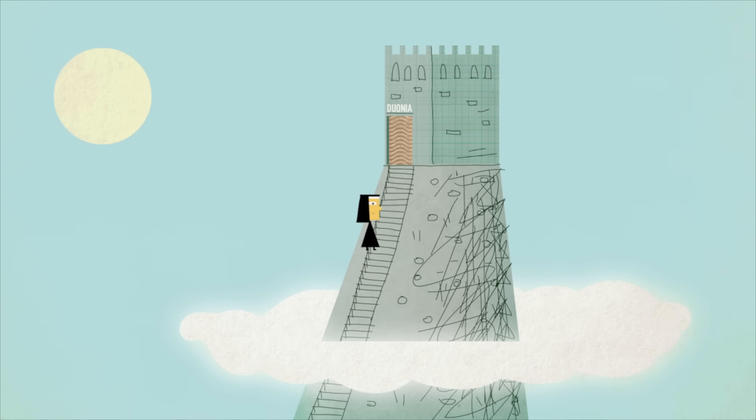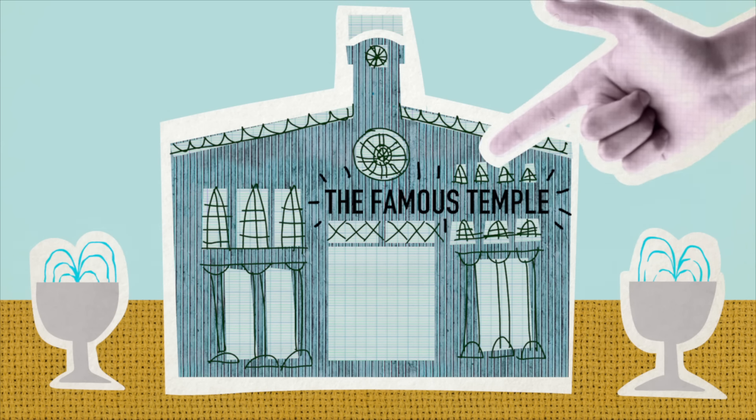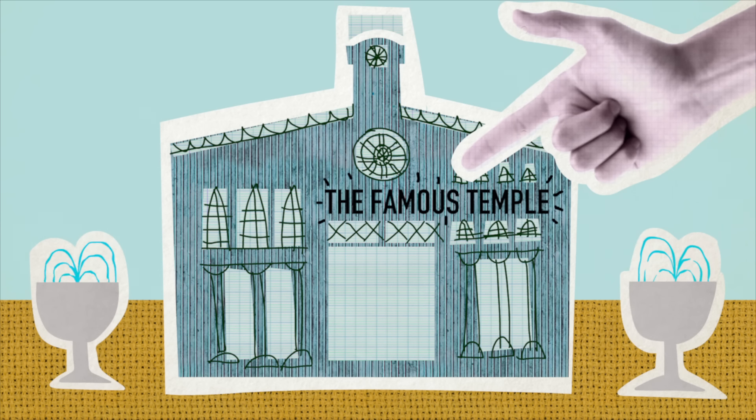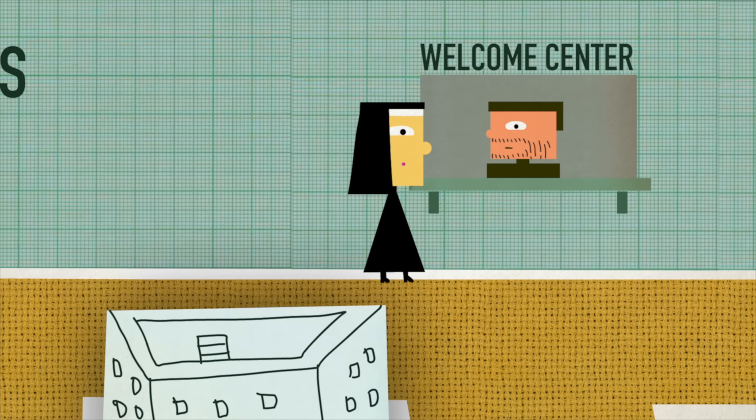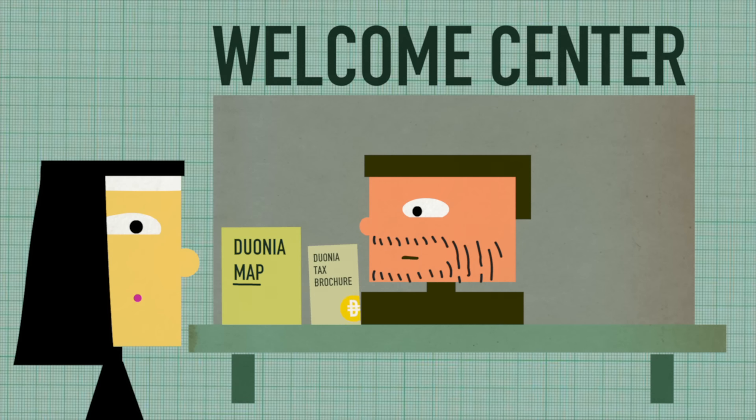After months of travel, you've arrived at Duonia, home to the famous temple that's the destination of your pilgrimage. Entering from the northwest, you pass through the city gates and the welcome center, where you're given a map and a brochure.